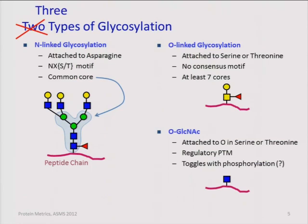A more recently discovered third type of glycosylation is very simple: it's called O-GlcNAc. The glycans are all the same — it's a single GlcNAc attached through the oxygen on serine or threonine, so it's attached like an O-glycosylation. It's quite different in that it's a regulatory PTM — it comes on and off — and there's always discussion about its interplay with phosphorylation.